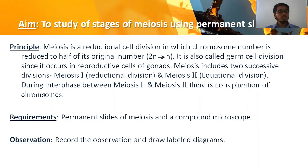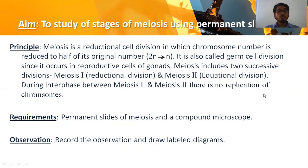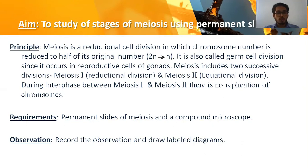Meiosis one is a reductional division where actual reduction of chromosome count occurs, whereas meiosis two is an equational division, similar to mitosis. During the interphase between meiosis one and meiosis two, there is no replication of chromosomes. DNA replication occurs only before meiosis one starts, during interphase, and does not occur a second time.